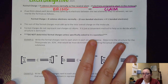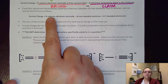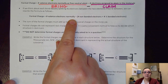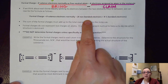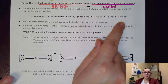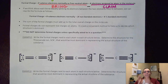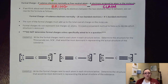Some books will show the formal charge formula as: valence electrons normally, minus non-bonded electrons, minus half of the bonded electrons — because that bond gets split equally amongst the two atoms sharing it. To see this in action, we're going to jump into an example.